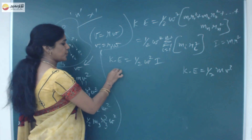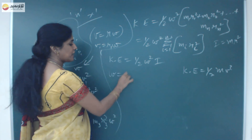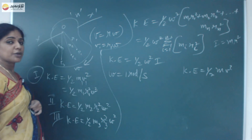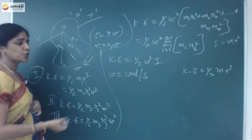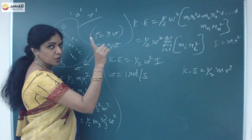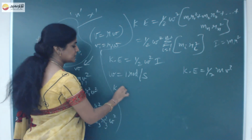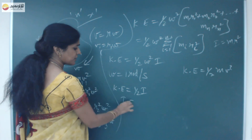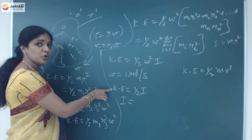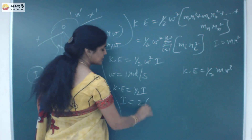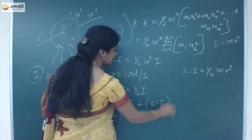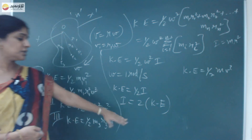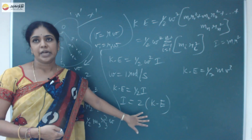If the object is going to rotate with an angular velocity of one radian per second, then omega equals one. So the kinetic energy becomes equal to half I times one, which gives I equal to twice the kinetic energy. Therefore, moment of inertia is nothing but twice the kinetic energy when the body rotates at unit angular velocity. This shows the relation between kinetic energy and moment of inertia.